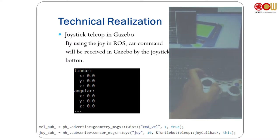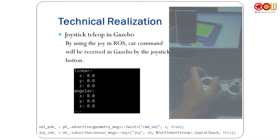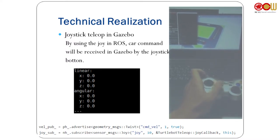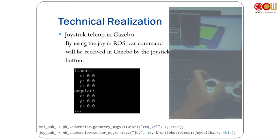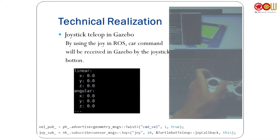When going straight, the x-axis gives a value of one; going back or turning gives the corresponding linear or angular velocity values. The message types I used are geometry messages and sensor messages.